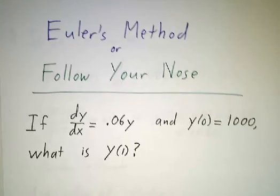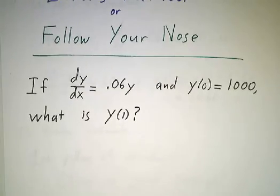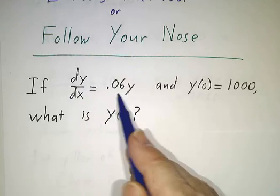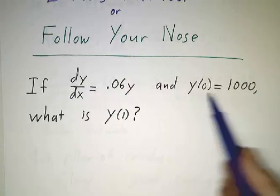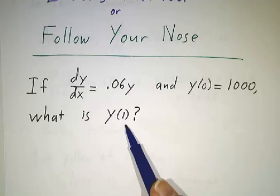So we'll apply to this problem. We have a differential equation, the derivative of y is 0.06y. We have an initial condition, y of 0 is 1000. We want to know what is y of 1.